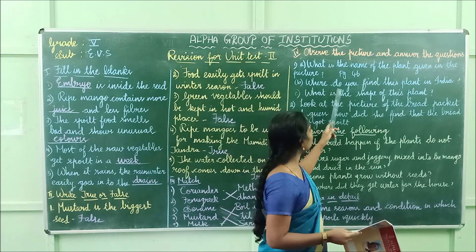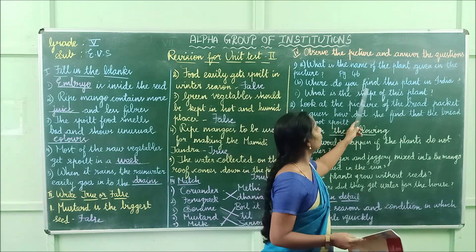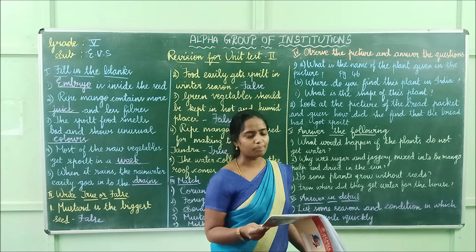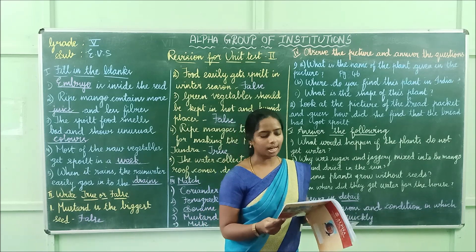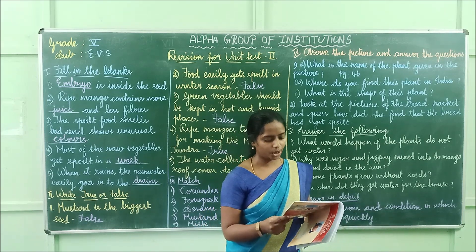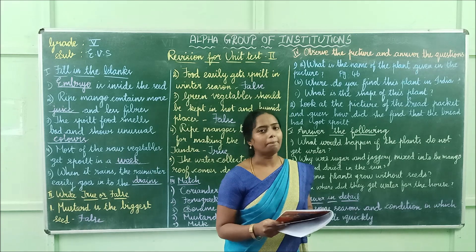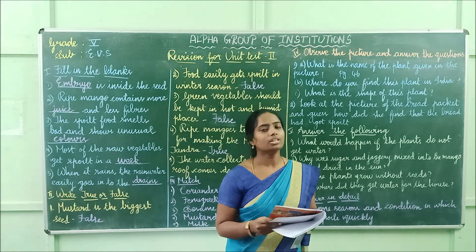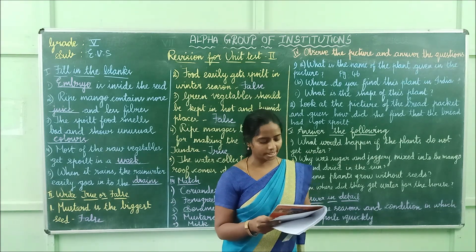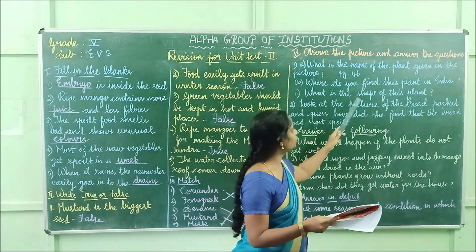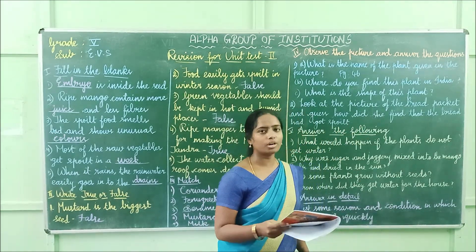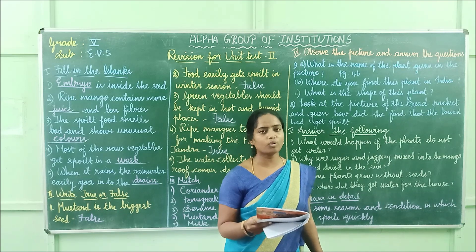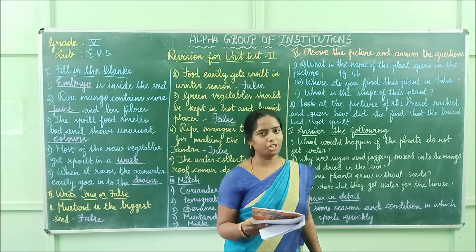Second question: where do you find this plant in India? The answer is Meghalaya. Spelling: M-E-G-H-A-L-A-Y-A. Third question: what is the shape of this plant? The answer is pitcher shape.